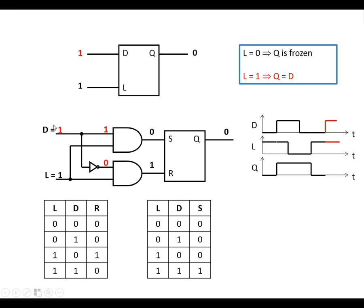And we're going to make D go high. We've now got a 0 and a 1 going into this AND gate, giving us a 0 on the output. We've now got a 1 and a 1 going in here, giving us a 1 on the output. So the bistable is now going to be set, and Q goes high. So when the latch is high, Q is exactly the same as D. And when the latch is low, Q is held.